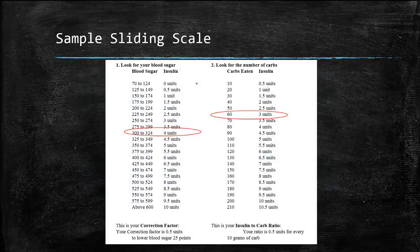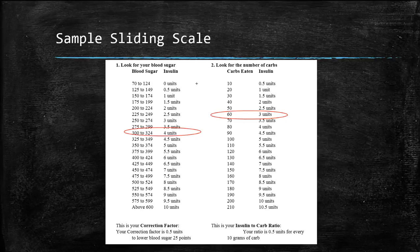Looking at the sliding scale, you can see you'll need 4 units for a blood sugar of 300, and 3 units to cover 64 grams of carbs.